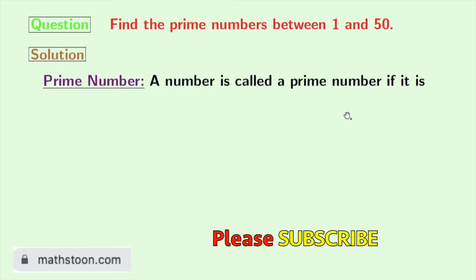A number is called a prime number if it is divisible only by 1 and the number itself. So, according to this definition,